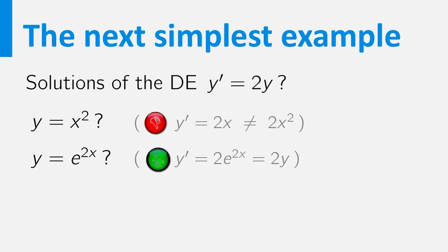Do you see how you can vary this function to find other solutions? In this case, adding a constant c doesn't work. The derivative of e to the 2x plus 5 equals 2 times e to the 2x, and this is not equal to 2 times e to the 2x plus 5.